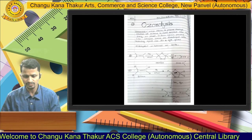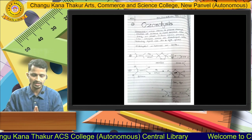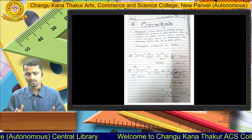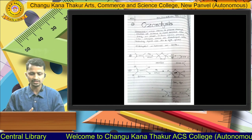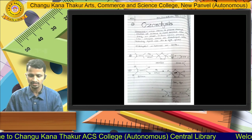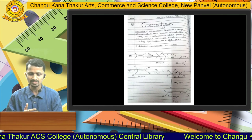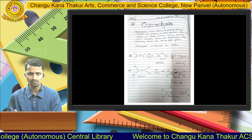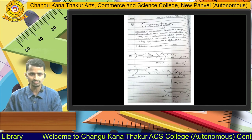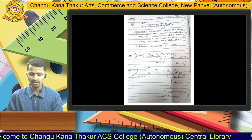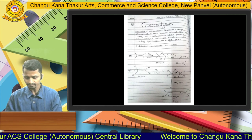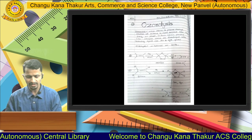The next reaction is ozonolysis. Ozonolysis, as the name indicates, is the reaction of ozone with an alkene. When ozone is passed through a solution of alkene in a solvent like ether, it forms a cyclic ozonide, which is then reduced by zinc and water to give carbonyl compounds — aldehydes, ketones, or a combination of both. For example, ethene on ozonolysis gives two molecules of formaldehyde.